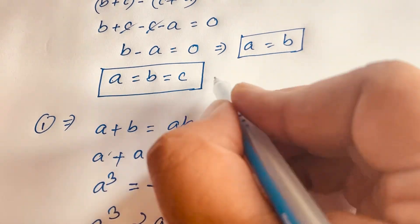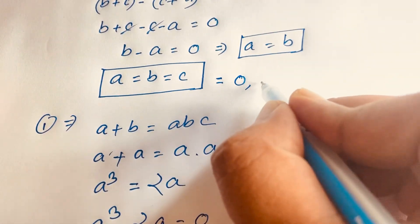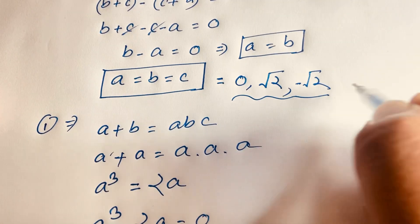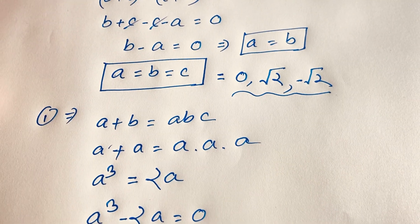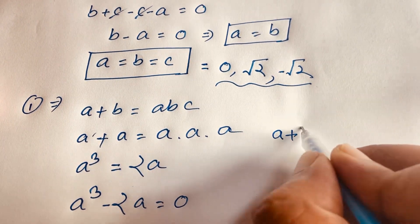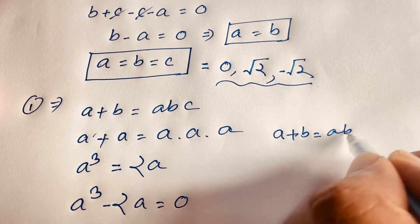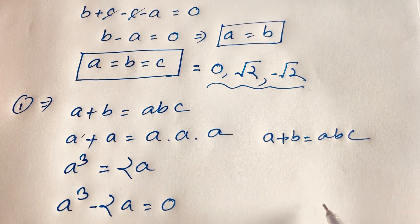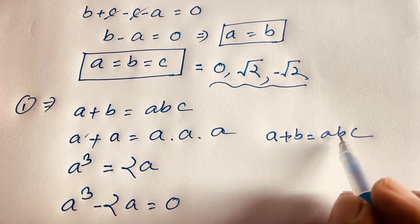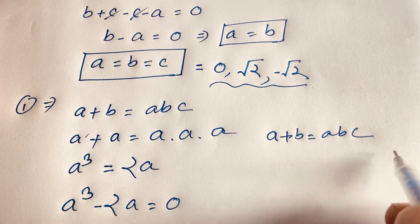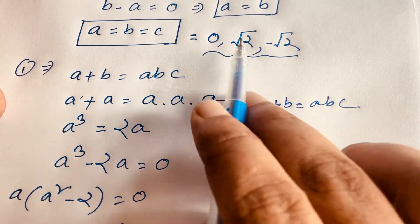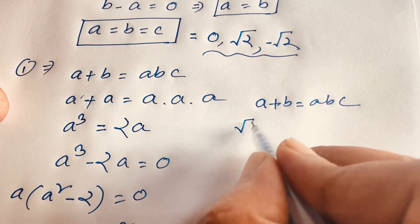Since a, b, and c are all equal, the final answers are 0, plus square root 2, and minus square root 2. Let's verify: taking the first equation a plus b is equal to abc, if a equals 0, then 0 plus 0 equals 0 times 0 times 0, which gives 0 equals 0. Left hand side equals right hand side.